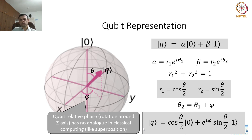This is another big difference between quantum and classical computing. You will learn more about the physical intuitions and basis states as well as phases in the subsequent modules. For now, keep in mind that we can represent any arbitrary qubit on a Bloch sphere using simply two angles theta and phi.